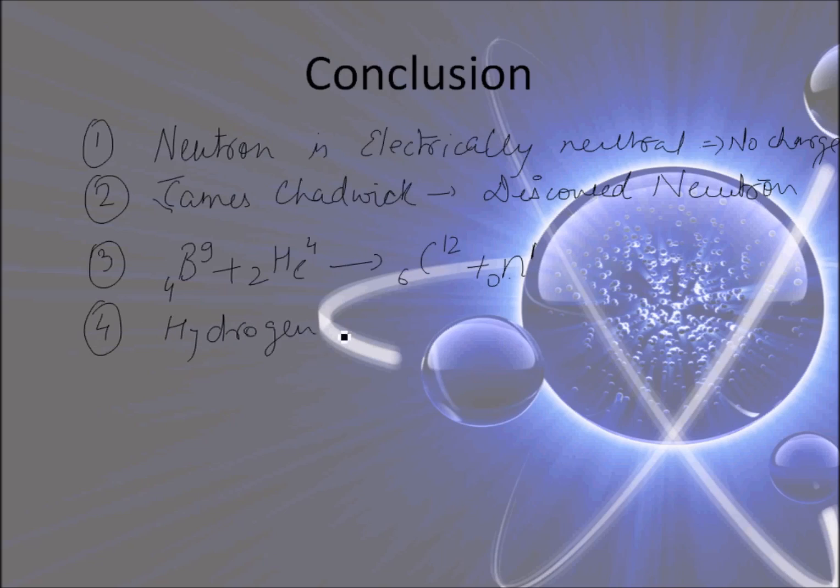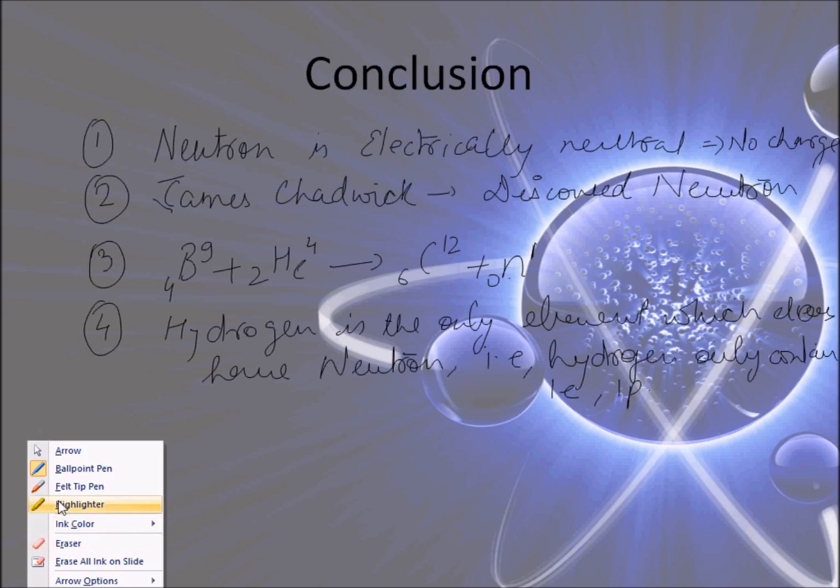And we should also know that hydrogen is the only element which doesn't have neutron. That is, hydrogen only contains one electron and one proton. So these are the basic things which we have understood in the session.